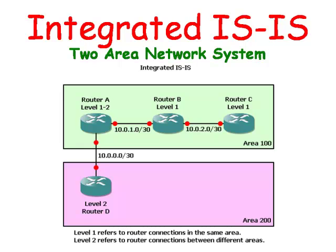Level 2 routers are used for the backbone and know about all the networks in all the areas. We will first be looking at the terminal window of router C which is a Level 1 router, then router D which is a Level 2 router, and then router A which is both a Level 1 and a Level 2 router. Let's now look at router C.